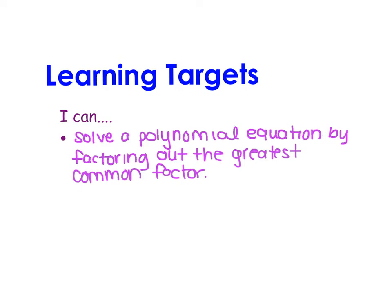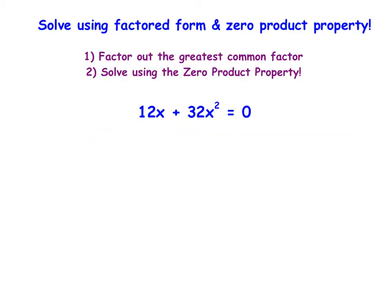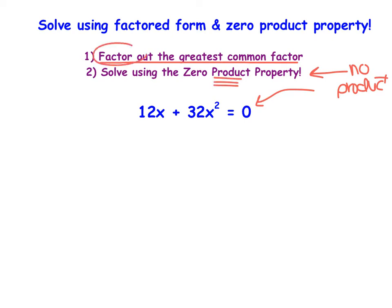We're going to tie together our knowledge of the zero product property and the greatest common factor, and solve polynomial equations by factoring out the greatest common factor. We cannot use the zero product property as-is because there's currently no product. There is a zero, but the zero product property stems from a product. Factoring is our way of turning this into a product — hence why factoring and the zero product property tie together.